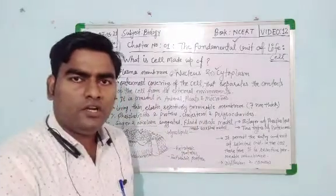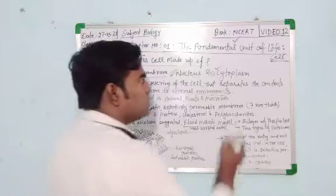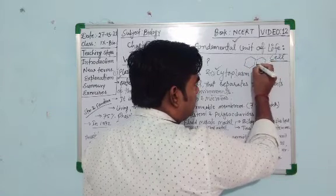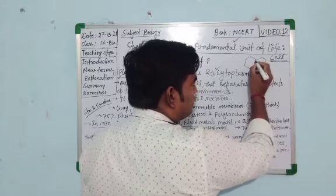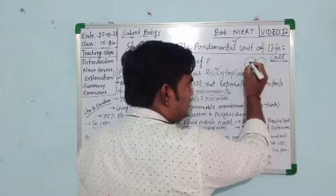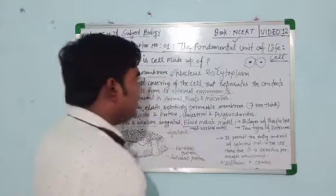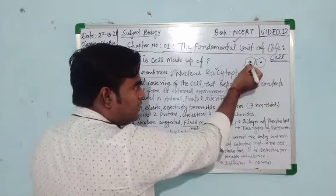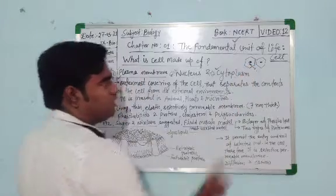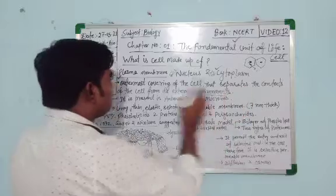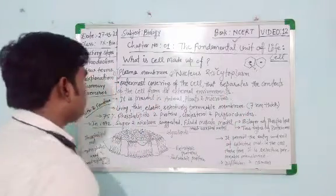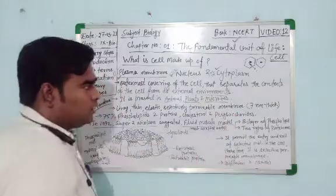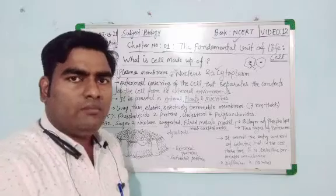It separates the cell content from its external environment. Suppose one figure is like this — this is the structure of a cell and this is another cell structure. In between, this is the plasma membrane which separates one cell from another. Inside the plasma membrane is the internal environment and outside the plasma membrane is the external environment. Plasma membrane is present in animal cells, plant cells, and microorganisms.